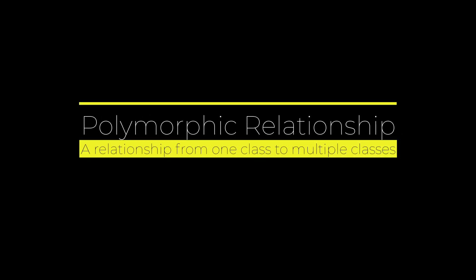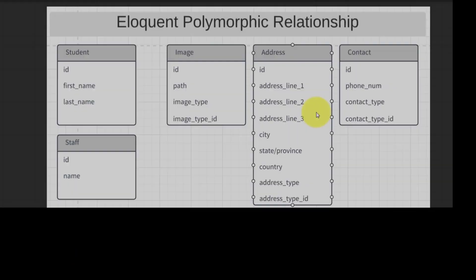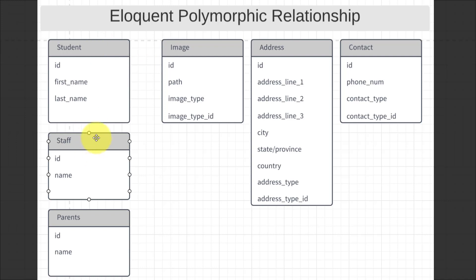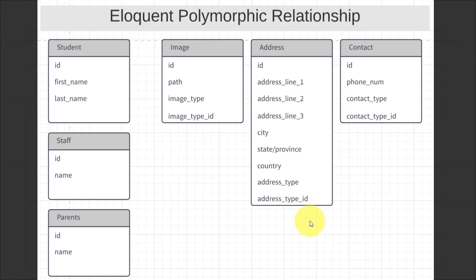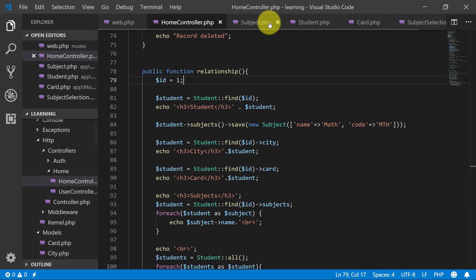Today we will learn about polymorphic relationships. A polymorphic relationship allows the target model to belong to more than one type of model using a single association. First we will understand these tables: student, staff, and parents. A student may have many images, an address, and contact information. Parents will also have image, address, and contact. Using these tables we will understand a polymorphic relationship.